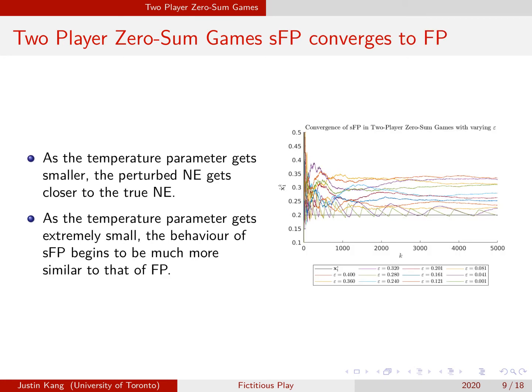As we adjust the temperature parameter, if it is too high the perturbed Nash equilibrium is very far from the true Nash equilibrium. As we decrease the temperature parameter, the perturbed Nash equilibrium gets closer and closer to the true Nash equilibrium, because the perturbed best response functions begin to look more and more like the true best response. In the limit, as we bring this temperature parameter lower, the dynamics of SFP begin to approach those of FP — fundamentally because both are governed by best response dynamics. With a very small temperature, we see rapid, jagged oscillations even in the SFP dynamics.